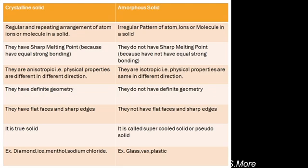Glass, wax, and plastic are common examples of amorphous solids. Thank you.